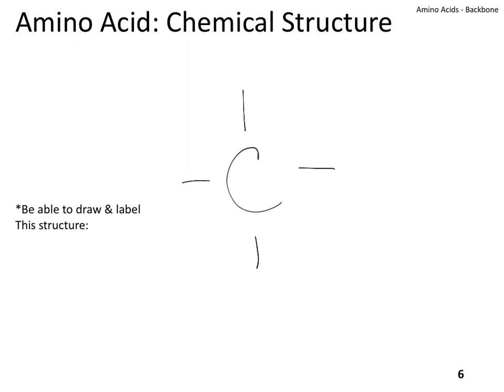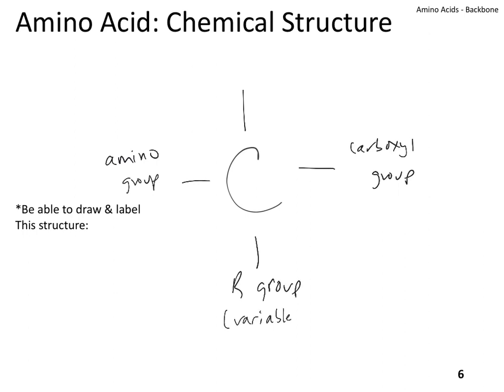We're going to build it like this: from the central carbon, there are going to be two different functional groups that are always the same. One of them is the amino group, and the other is the carboxyl group. I would encourage you to draw them this way each time. There is also a variable group called the R group, and this could be a collection of different atoms or functional groups — it could even be very simple, like a hydrogen.